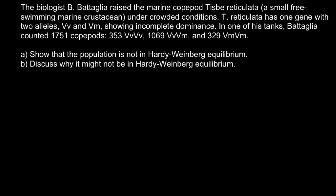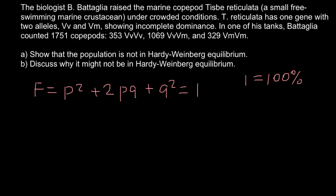There are three genotypes: one homozygous, one heterozygous, and another homozygous. There are two questions. Question A asks us to show that the population is not in Hardy-Weinberg equilibrium. Here is the Hardy-Weinberg formula — F stands for the frequencies of the genotypes. We have two alleles that can make three genotypes: homozygous dominant, heterozygous, and homozygous recessive. All three genotypes combined equal one, which equals 100%.